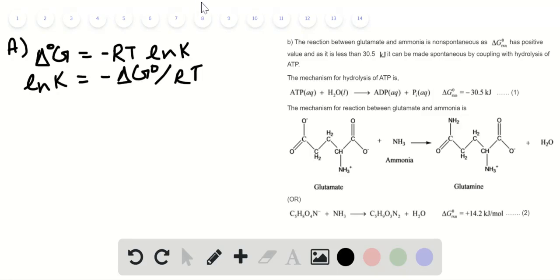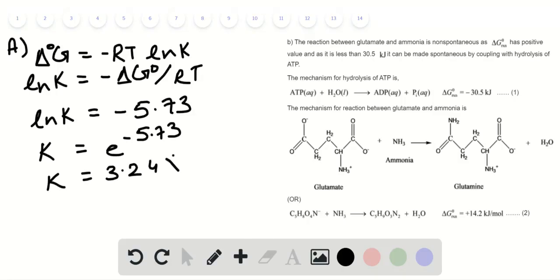Substituting the values into this equation, ln K equals -5.73. Removing the natural log, the value of K is 3.24 × 10^-3, which represents the equilibrium constant.